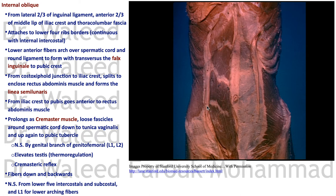Lower down, the fibers arch medially to become posterior to the spermatic cord — having first been anterior — then unite with similar fibers from the transversus abdominis to form the falx inguinalis, or conjoint tendon. This arching forms the roof of the inguinal canal.